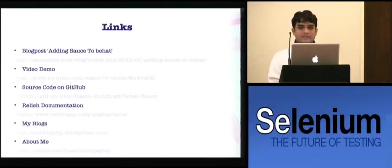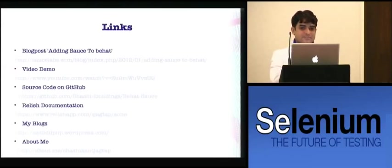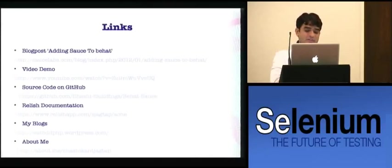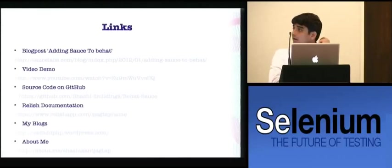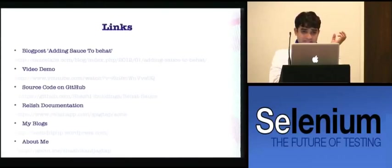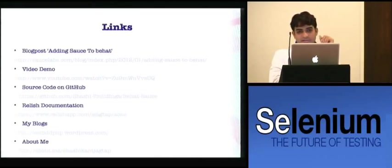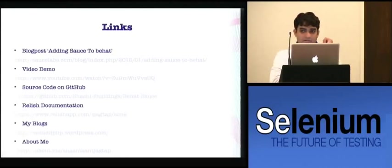If your application is developed in any other language, you can still use Behat for automating your acceptance tests or functional tests, because functional tests are totally independent of the application language or technology. This is basically for web acceptance testing — writing automated tests like you do with Selenium. So it doesn't matter which language was used to develop the application. If your application is developed in C# or Java, you can still write functional tests or acceptance tests using Behat.